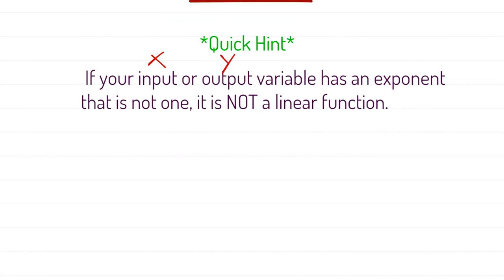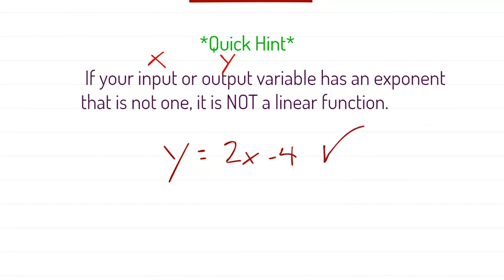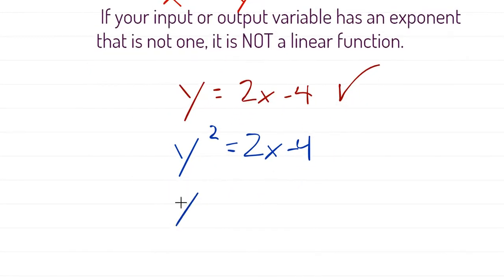For example, y equals 2x minus 4: y has an exponent of 1 — if there's nothing written, we assume it's an invisible 1 — and x also has an exponent of 1. So that's linear. But if I gave you y squared equals 2x minus 4, y has an exponent of 2, which is not 1. That would not be a linear equation.